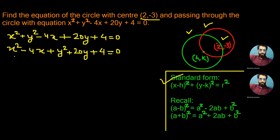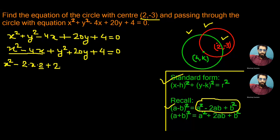Now we write x² - 4x as x² - 2·x·2, since 2·x·2 is the same as 4x. Comparing this with the formula a² - 2ab + b² = (a - b)², this 2 is in place of b. So we add 2² inside the expression and balance it by also writing -2² outside.